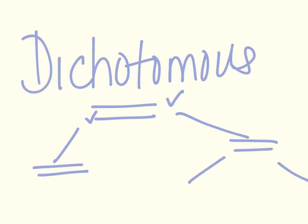Dichotomous keys always give two choices at each step. You have to be very careful to follow the directions in the key — which is the dichotomous key — as you go to identify the organisms.